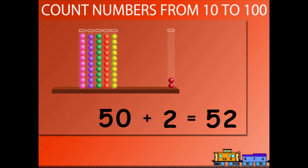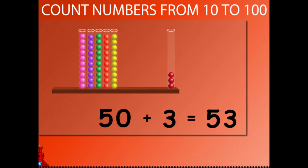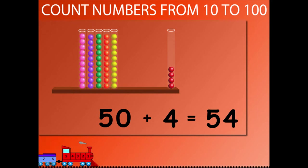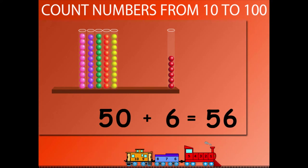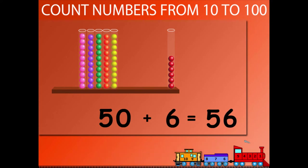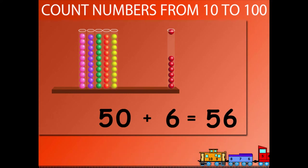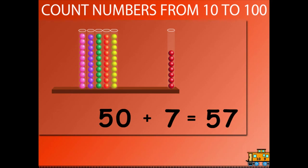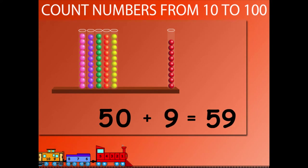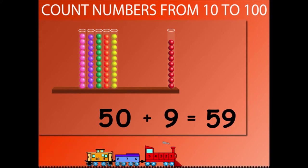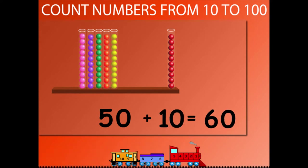50 plus 2 is equal to 52. 50 plus 3 is equal to 53. 50 plus 4 is equal to 54. 50 plus 5 is equal to 55. 50 plus 6 is equal to 56. 50 plus 7 is equal to 57.